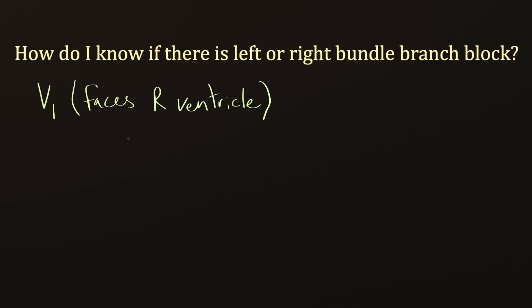The first part is to identify whether or not there's actually a bundle branch block. The way to do that is to look at the QRS. So the beginning of the Q wave to the end of the S wave, and if this complex is greater than 0.12 seconds, then you have bundle branch block. For those of you who like to think in a more visual way, 0.12 seconds is three small squares on your ECG paper.